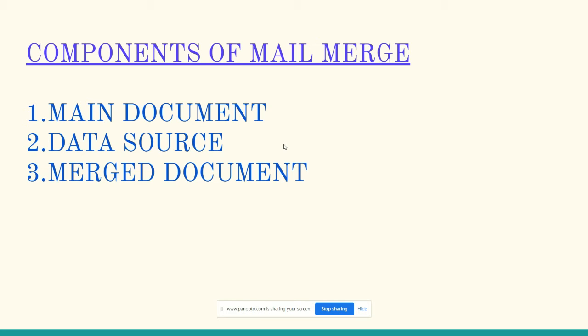Components of mail merging. There are three main components in mail merging. The first component is the main document. The second one is the data source. The third one is the merged document.